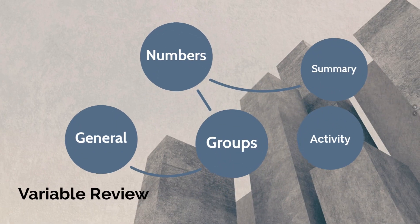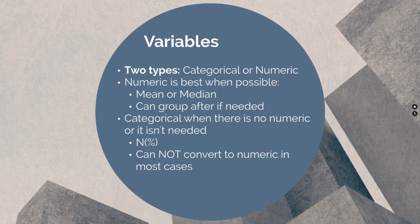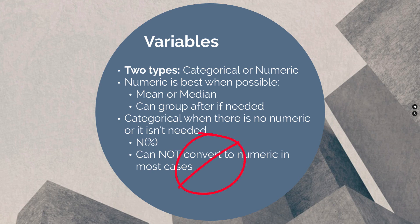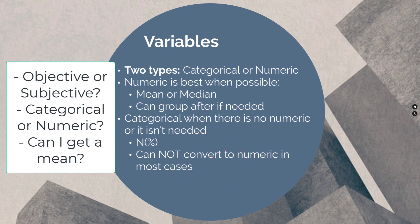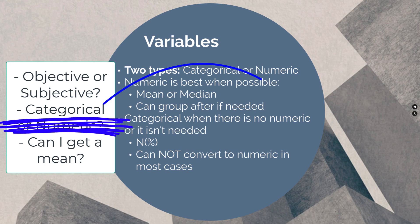When looking at continuous and categorical variables: numeric is best when possible — you can get a mean or median, and you can group later if needed. Use categorical when there is no numeric response or that level of specificity is not needed, reporting the n and percent, or cumulative if ordinal. You often cannot convert categorical variables back to numeric unless specifically collected that way. Ask yourself: is it objective or subjective? Is it categorical or numeric? Can I get a mean from it? If categorical, is it ordinal or nominal?